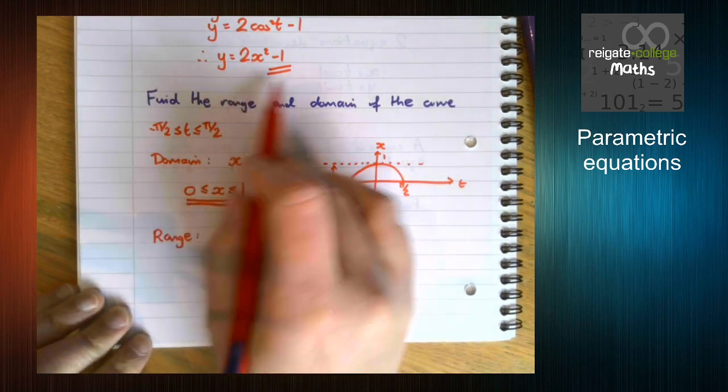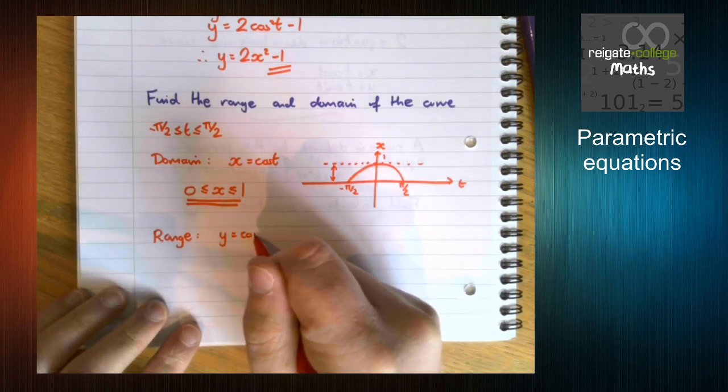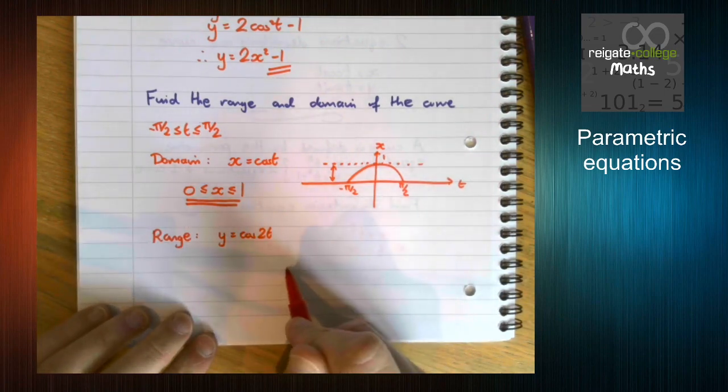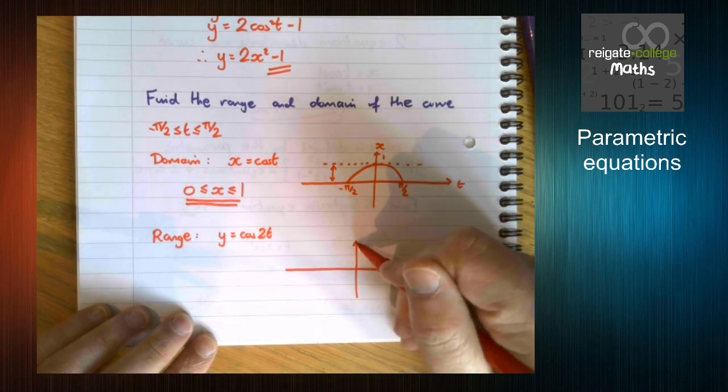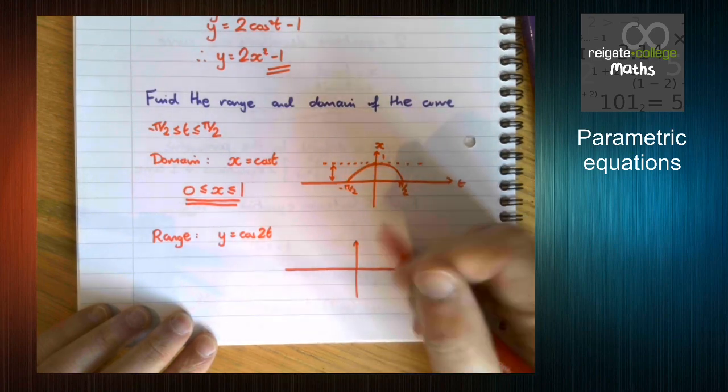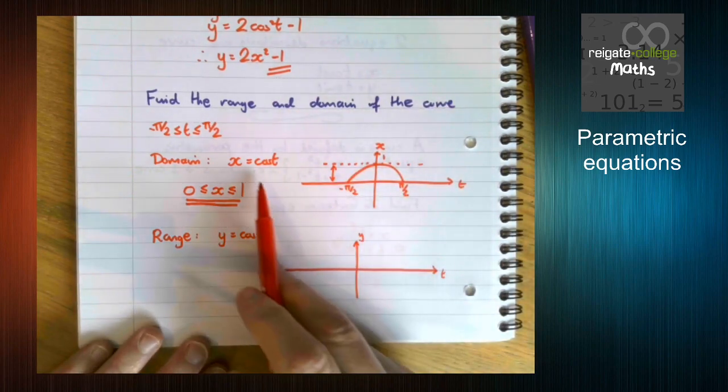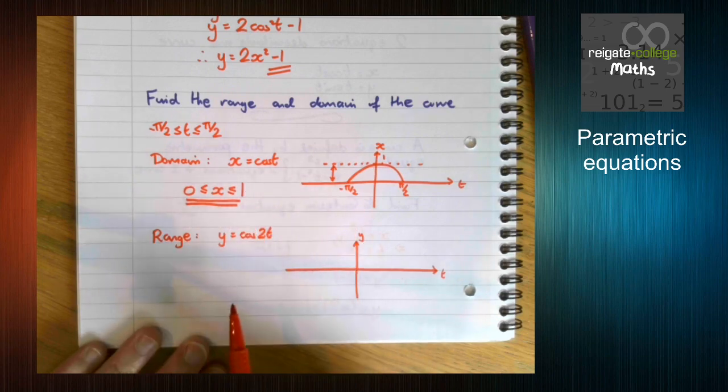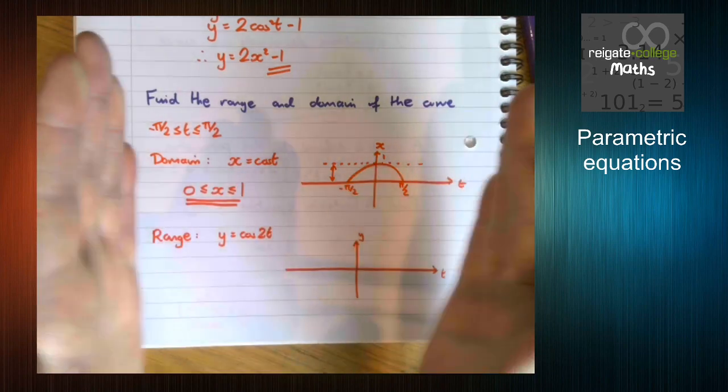If you've got the domain here, you can work out the range from this. But let's do it from this. So we've got y equals cos 2t. So again, let's think about sketching the graph of cos 2t between minus pi over 2 and pi over 2. This time, the y axis is y, the x axis is t. Notice how we've got x is cos t and y is cos 2t, so we change the y axis. So this one is the same as this graph, but squashed.